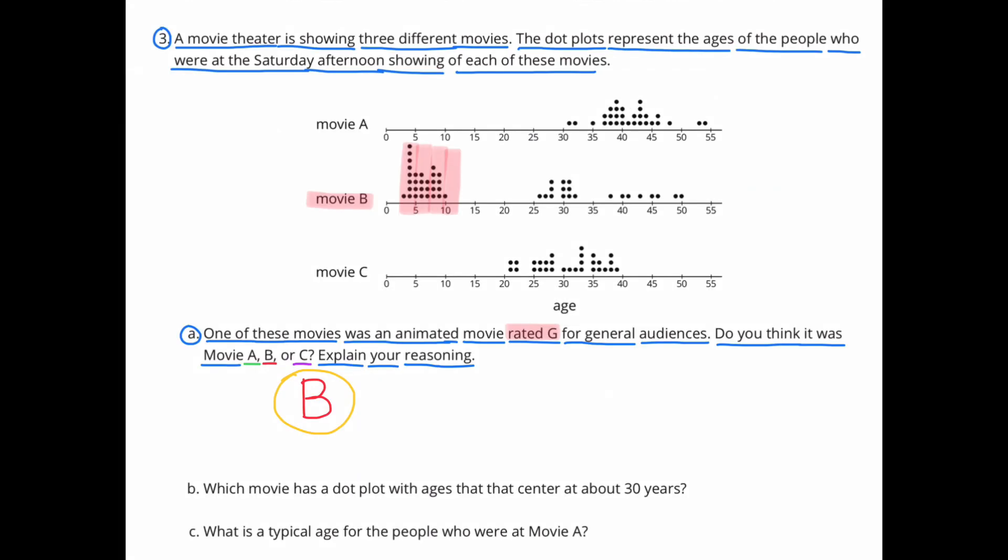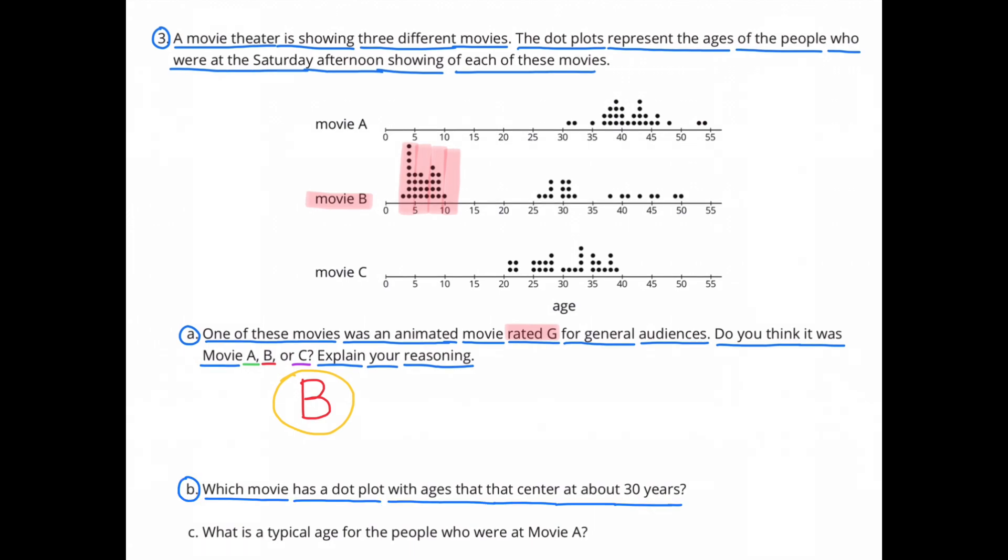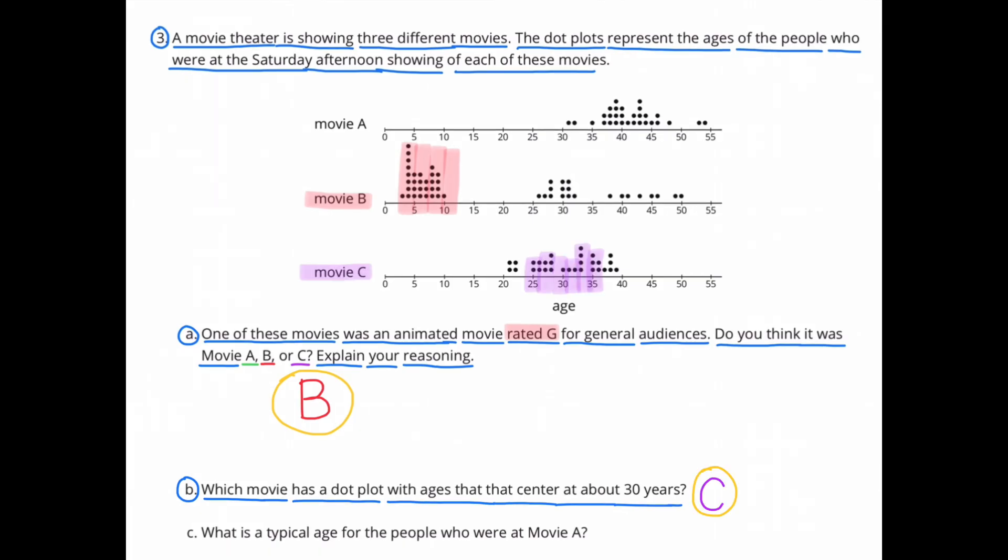I think it was movie B. Movie B had a much younger audience than movie A and C. B. Which movie has a dot plot with ages that center at about 30 years? I picked movie C because most of their audience was between the ages of 25 and 35.